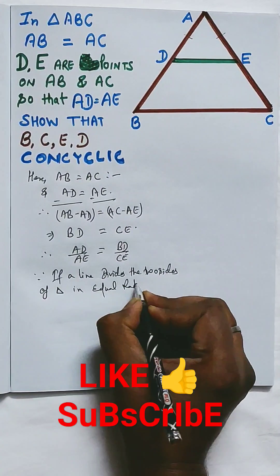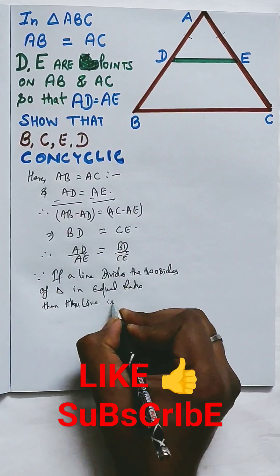So if a line divides the two sides of a triangle in equal ratio, then the line is parallel to the third side.